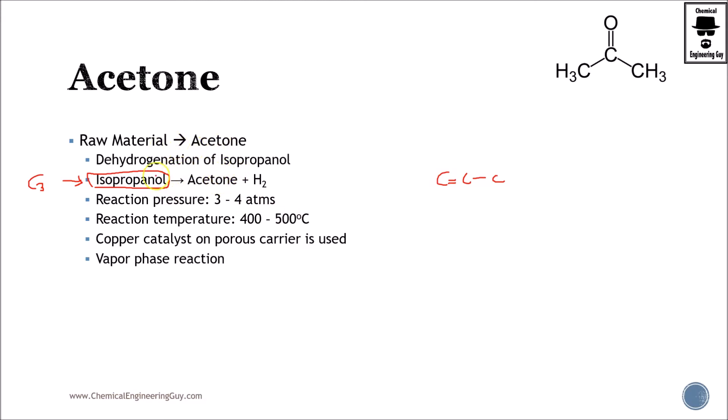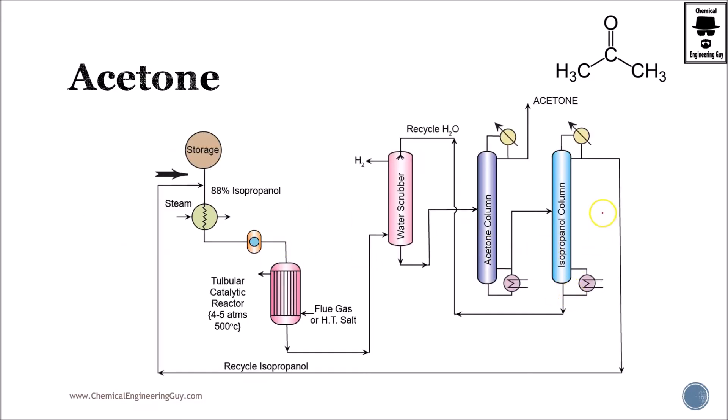The main reaction is going to be dehydrogenation of the isopropanol, meaning that we want to remove hydrogen gas. The key players are hydrogen gas, acetone, isopropanol and so on. Pressures are mild but temperatures are huge. In order to favor the gasification of hydrogen gas you must increase the temperature drastically. We are going to use a catalyst carrier of copper and this is done in vapor phase.